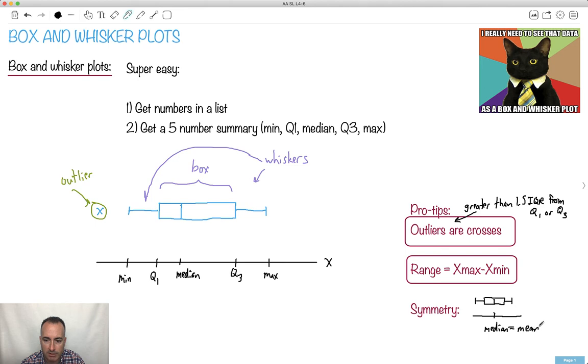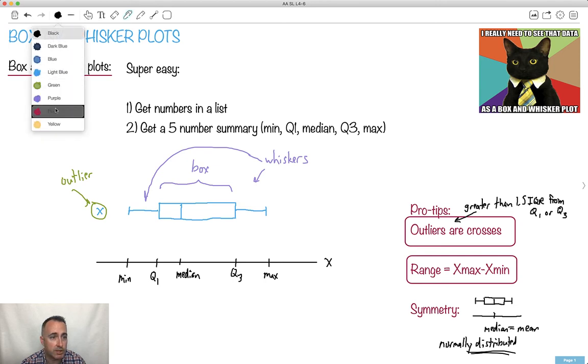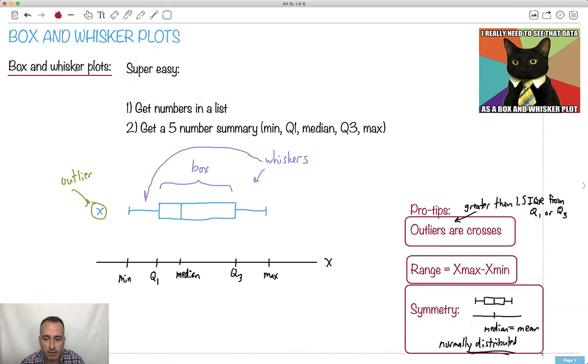In fact, if it's symmetric like this, we can actually say it's normally distributed. If it's symmetric, it's probably normally distributed. So that's one neat little conclusion we can make from these box and whisker plots. So how do we go about doing these in practice?